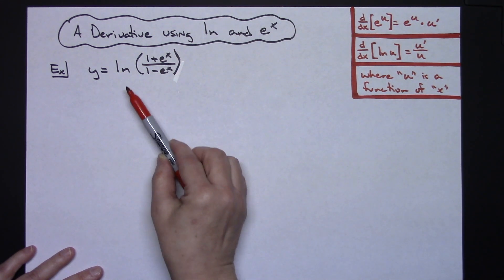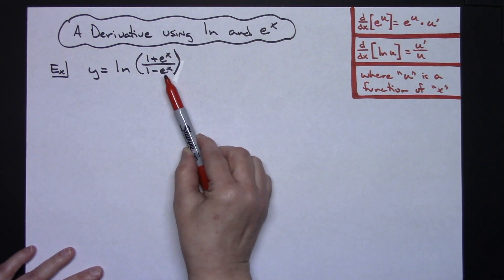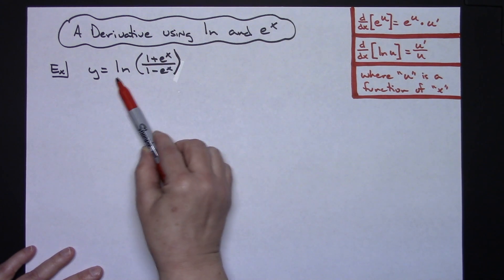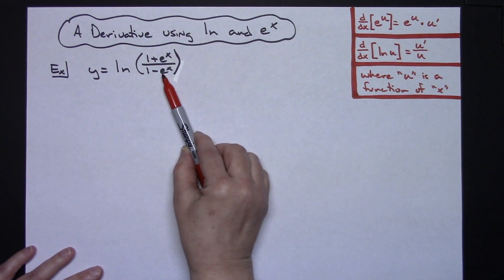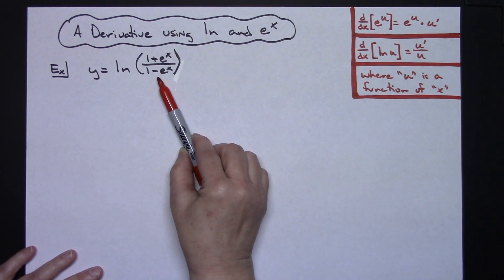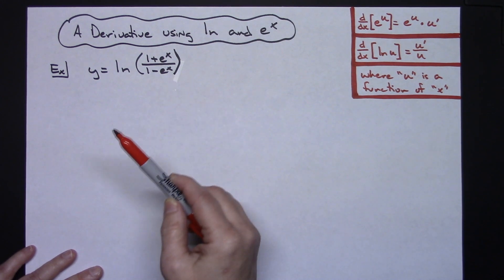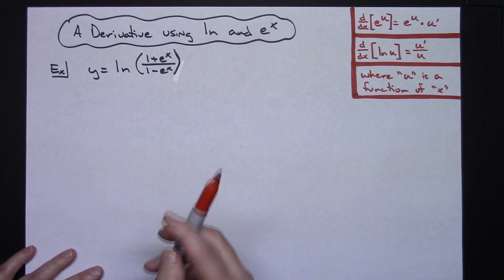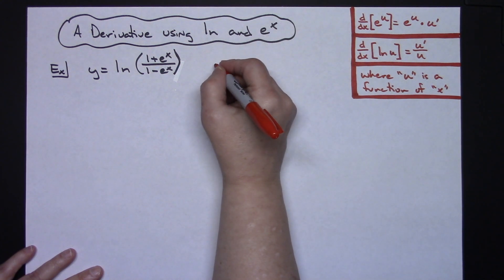In this particular instance where you've got a log function and you see a log that you're dividing with, the easiest way to do this is to apply some log rules to that function before you start to take the derivative so that you can simplify it.